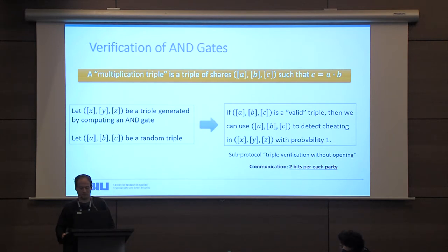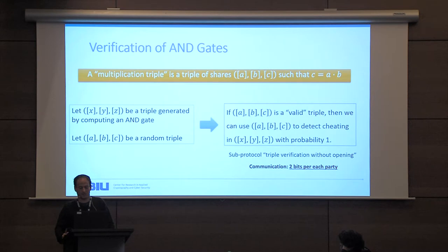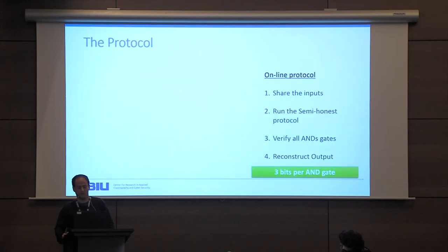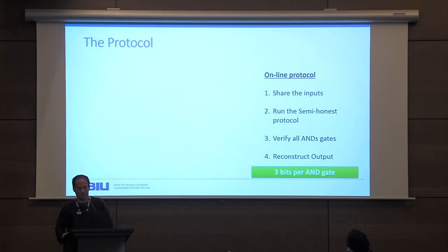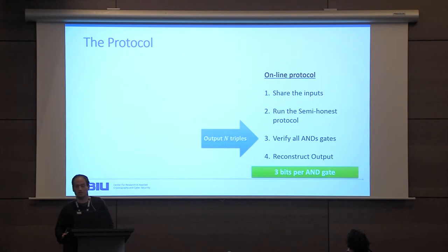This gives us a simple online protocol. After sharing the inputs, the parties run the semi-honest protocol and then use the verification sub-protocol to verify all AND gate computations, then reconstruct the output. Since the semi-honest protocol requires one bit per party and verification requires two bits per party, the online protocol has communication of only three bits per party per AND gate. The remaining question is how to generate the random triples used in the verification step.